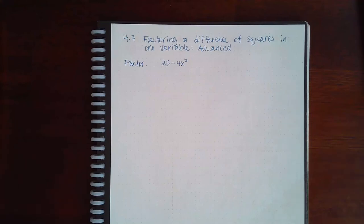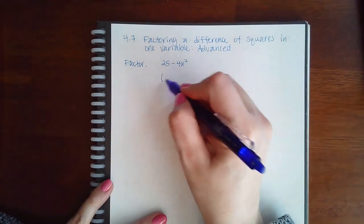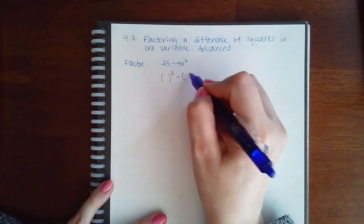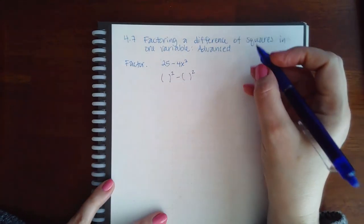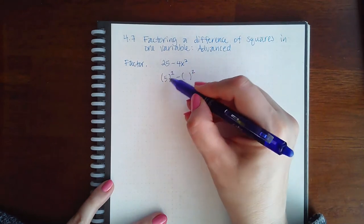Here we have 4.7: Factoring a difference of squares in one variable, advanced. Again, it's the same concept. You figure out what is being squared and then use the formula. Here, I know that 5 squared gives me 25.